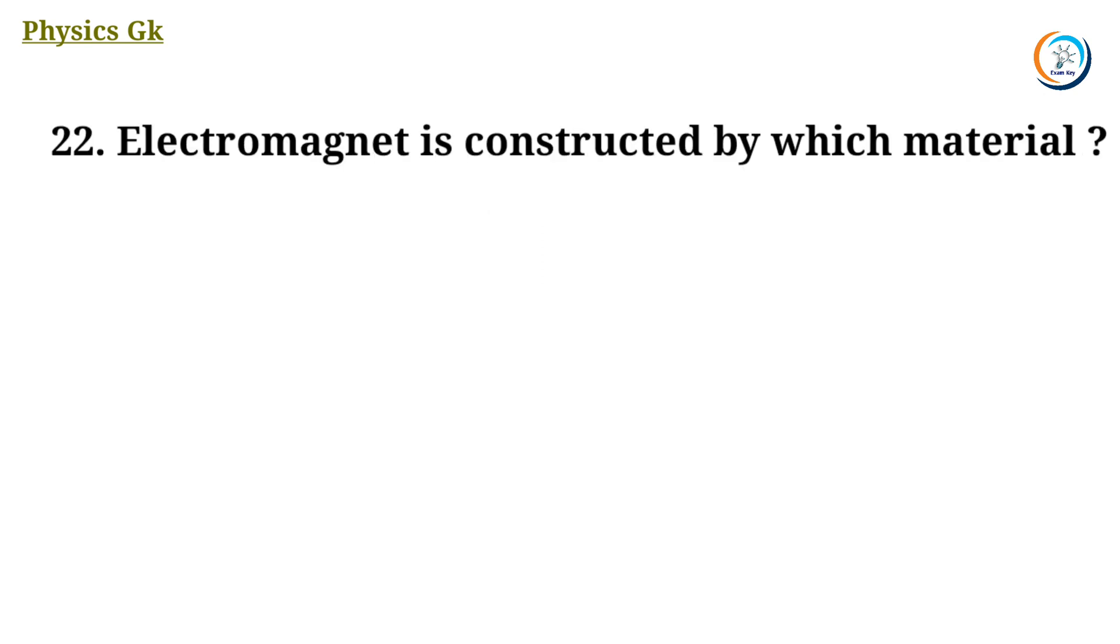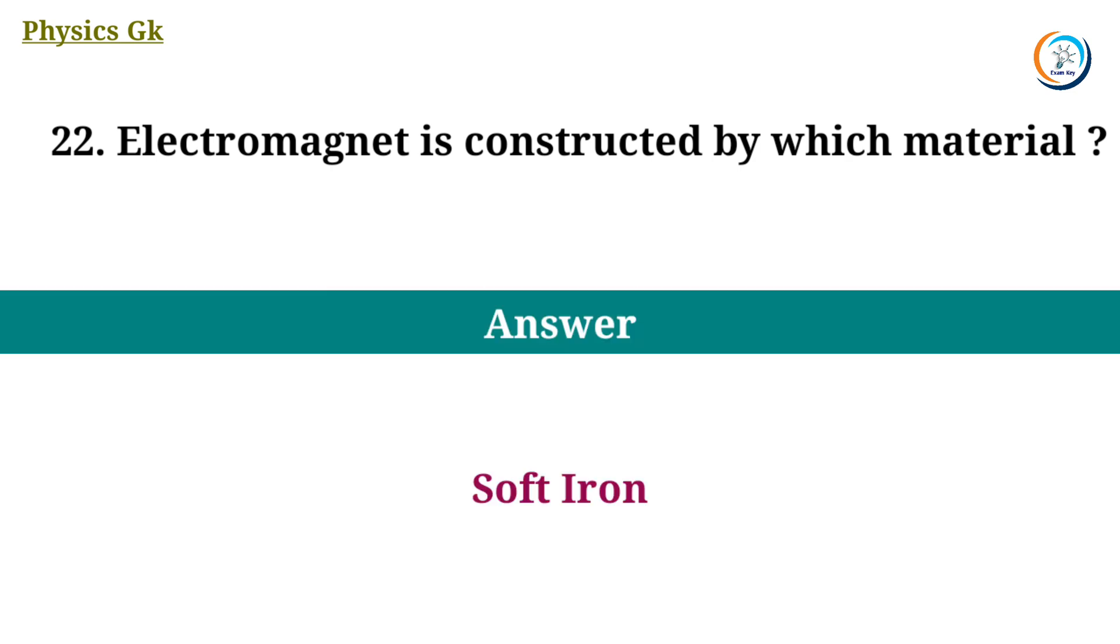Electromagnet is constructed by which material? Answer. Soft iron.